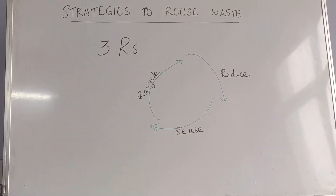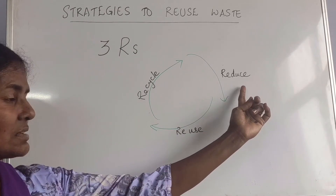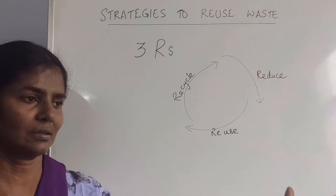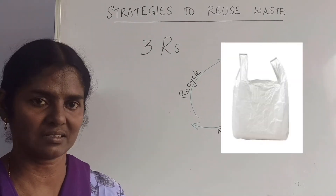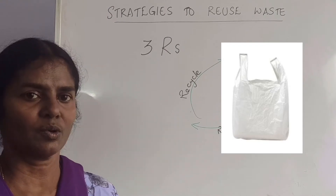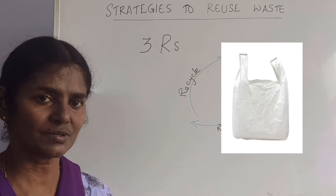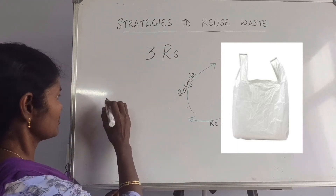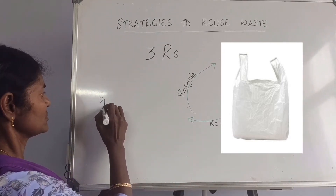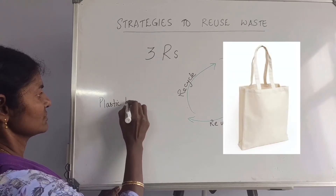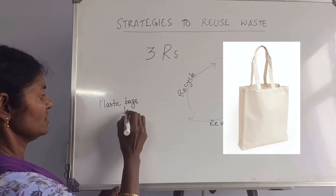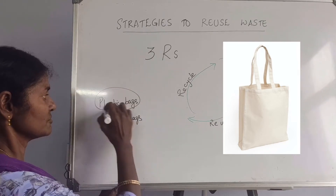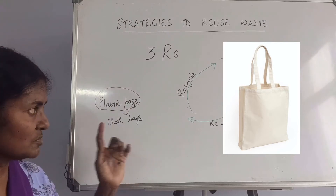When we come to the point of reducing — how can we reduce waste? For example, the current problem is with polythene bags. Whenever we want to go shopping, instead of using more and more polythene bags, we could replace them with cloth bags. Thereby we are reducing a lot of waste and hazards due to plastic.